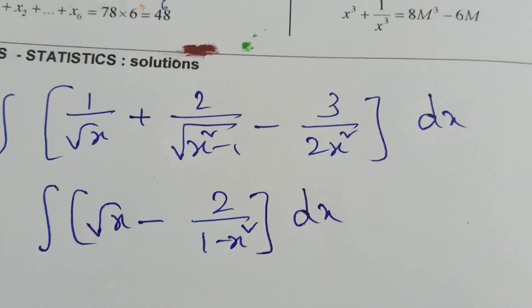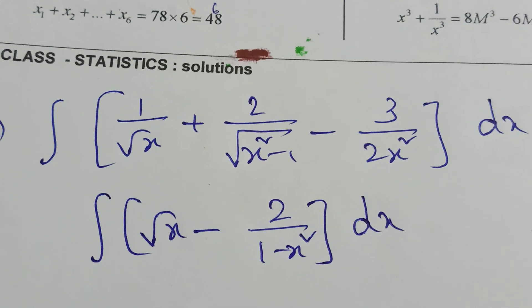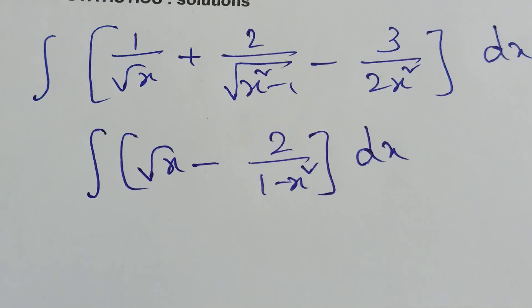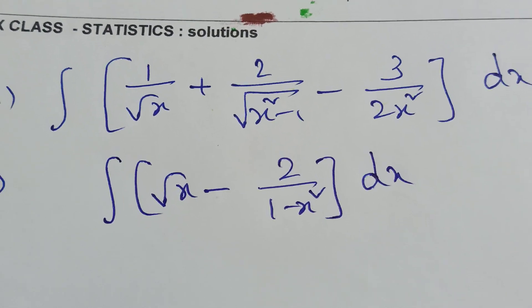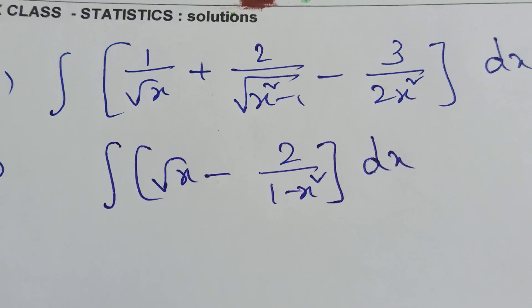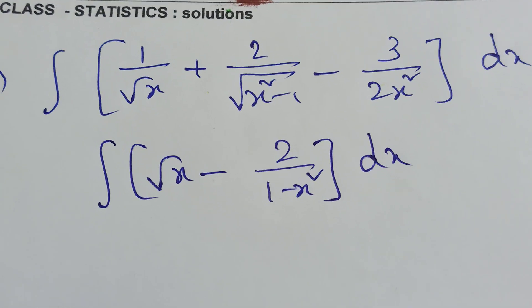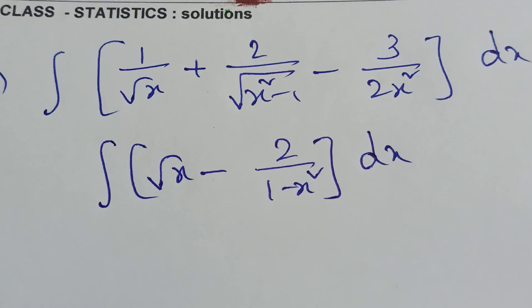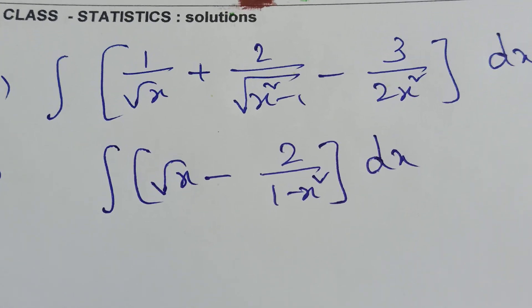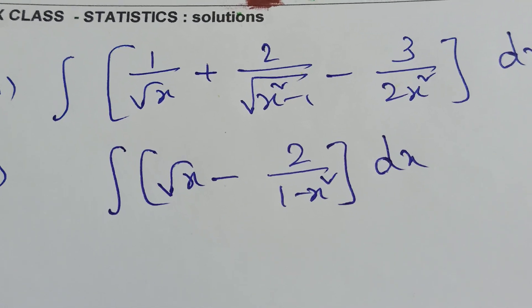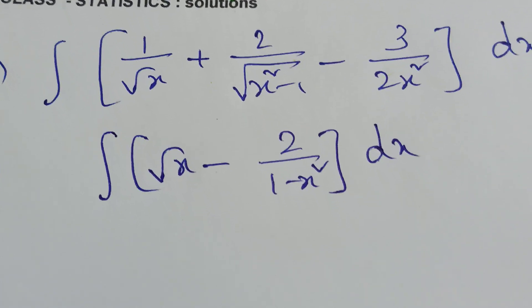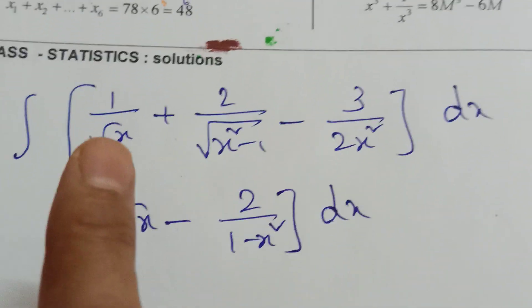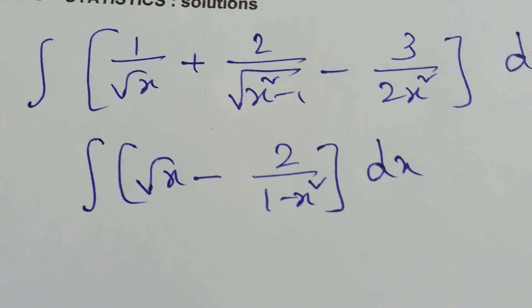Now here is homework: Problem 1 is integration of [1/√x + 2/√(x²-1) - 3/(2x²)] dx. Problem 2 is integration of [√x - 2/(1-x²)] dx. Write the answers in the comment box. Remember that integration of √x means writing it as x^(1/2) and using the formula: integration of xⁿ = x^(n+1)/(n+1). Check the formulas in my integration part 1 video. All the best, thank you, watch my channel.